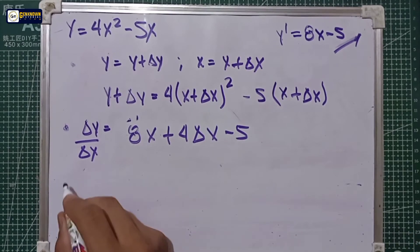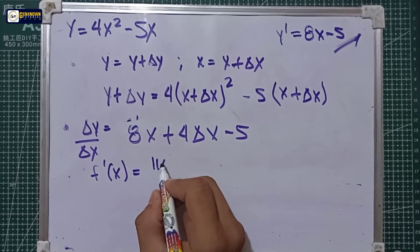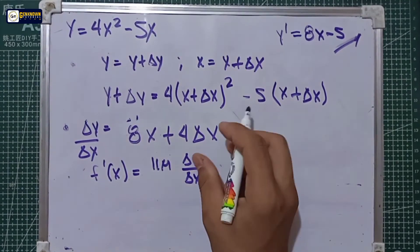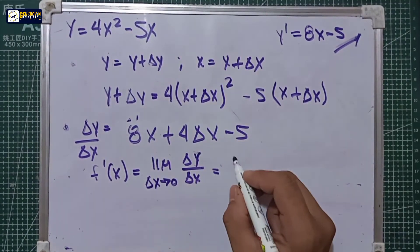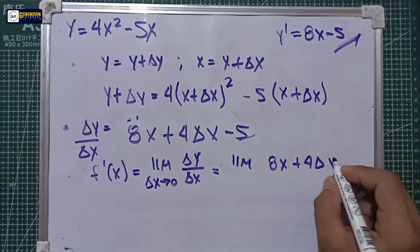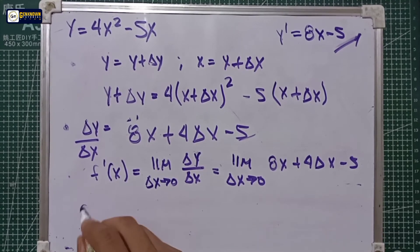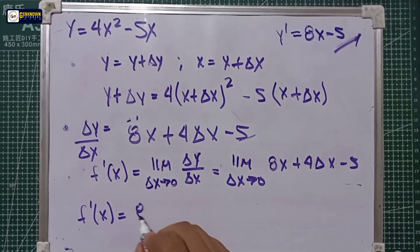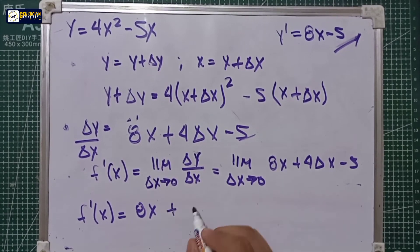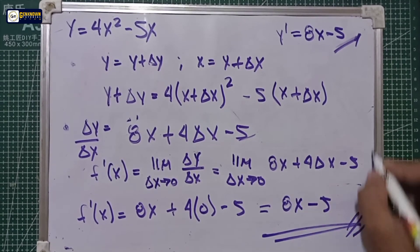The last and final step: determine the limit. Using f prime of x equal to the limit of delta y over delta x as delta x approaches zero. So the limit of 8x plus 4·delta x minus 5, as delta x approaches zero. We substitute zero for all delta x: f prime of x equals 8x plus 4 times zero minus 5, which equals 8x minus 5. As you can see, this matches the short method answer.